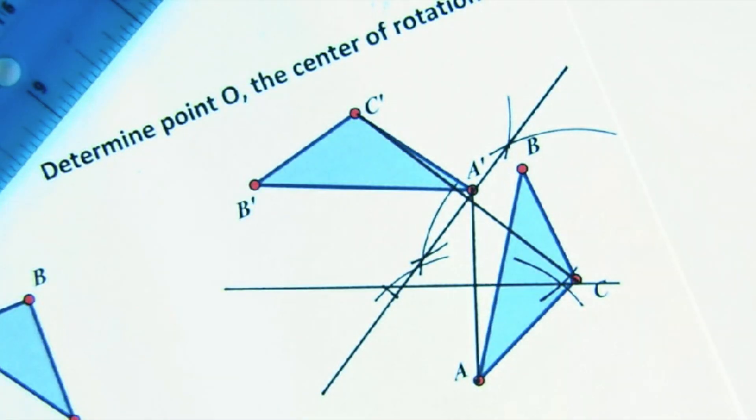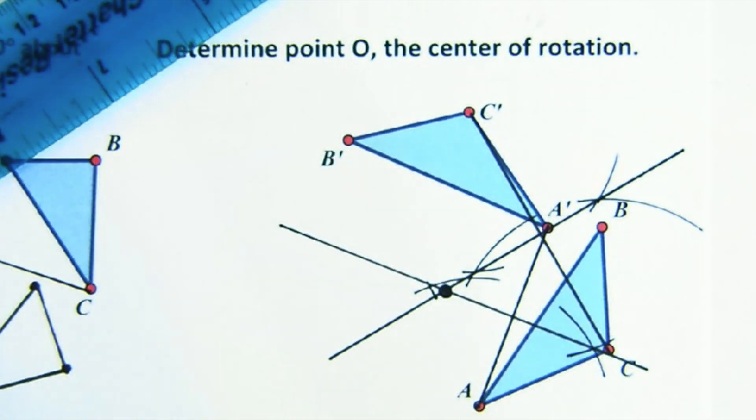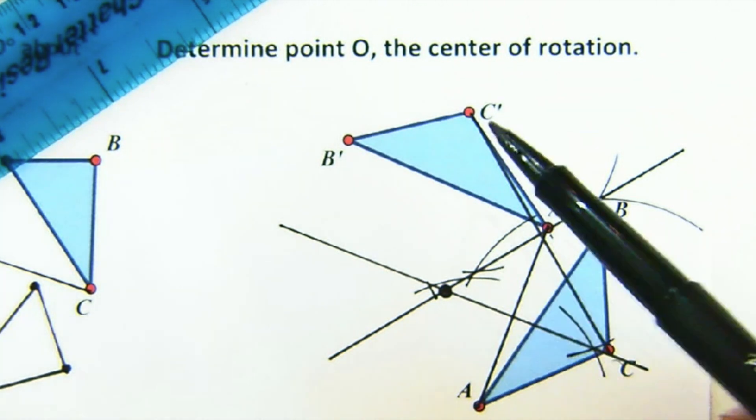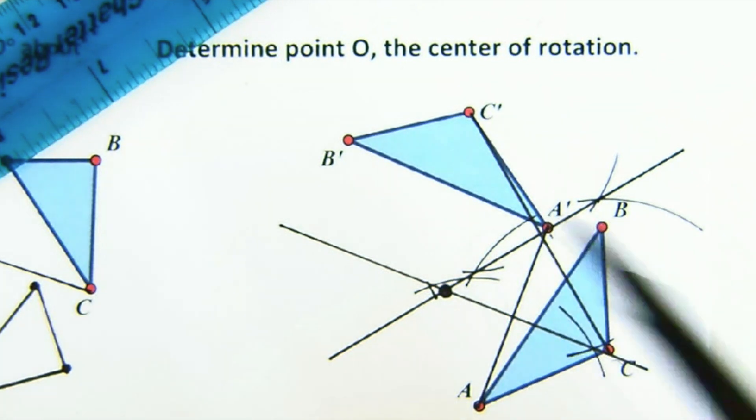Aha! Now right where they meet is that magical point. Now why is that the answer? Well, the perpendicular bisector gave me all points that were the same distance from A and A prime. But I also needed a point that was the same distance from C and C prime. So I did two perpendicular bisectors, and they found the center.